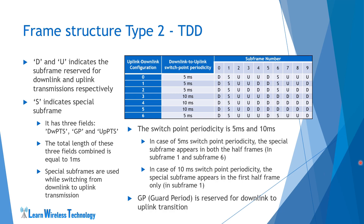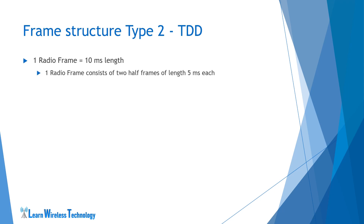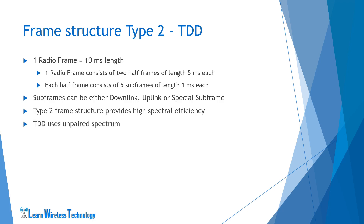A few more points from the configuration table: subframe 0 and subframe 5 are always downlink subframes. The uplink-downlink configuration is selected based on the amount of data to be transferred — when downlink data volume is high, the configuration with more downlink subframes is selected. In summary for Type 2: one radio frame is 10 ms, with two half frames of 5 ms each, and each half frame has 5 subframes of 1 ms each. Subframes can be downlink, uplink, or special. TDD is preferred for high spectral efficiency since it operates in unpaired spectrum using only one frequency, with transmission separated in the time domain, saving bandwidth.